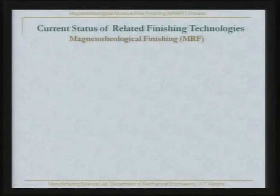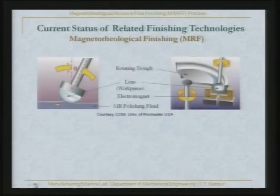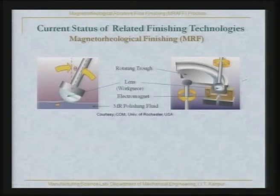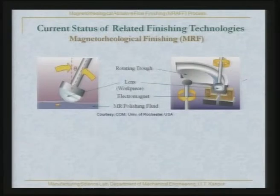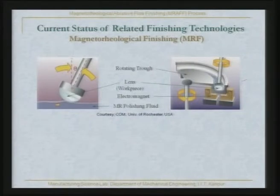Here the MRF process is described in terms of two very interesting figures. On the right side, you have two magnets indicated by N and S — north pole and south pole — and there is a lens which is to be finished. There is a circular channel in which you have an MR polishing fluid shown in blue color. This channel is continuously rotating and the lens can rotate at its own axis and be tilted on either side to cover the whole surface for finishing purposes.